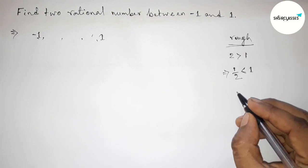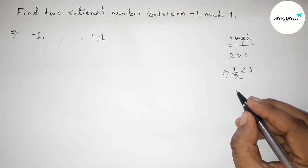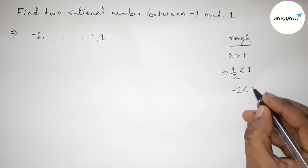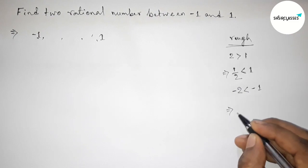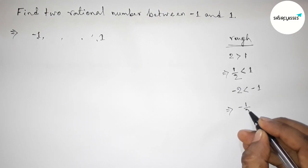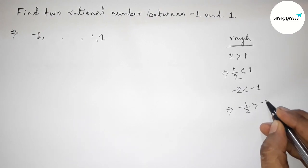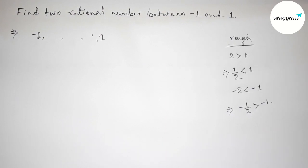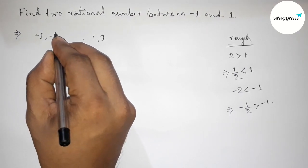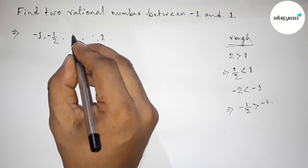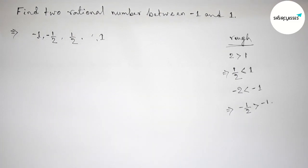Similarly, taking minus two — minus two is less than minus one. Now taking the inverse of both numbers: inverse of minus two is minus one by two, and this is greater than minus one. So minus one by two is a rational number.